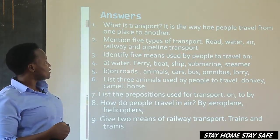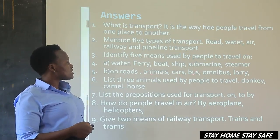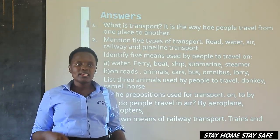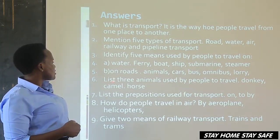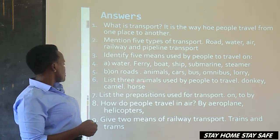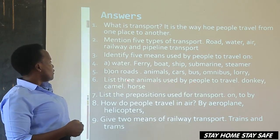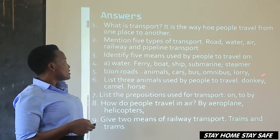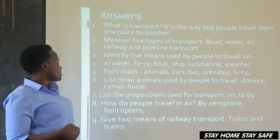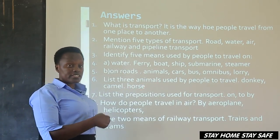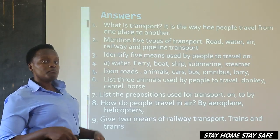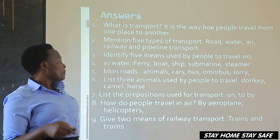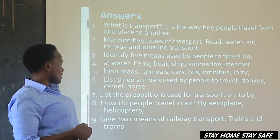Five means used by people to travel on roads: we have animals, cars, buses, omnibuses, lorries, trailers, tankers, and many others. Number six, list three animals used by people to travel. Some use donkeys, others use horses. In some countries, people use elephants; in others, bullocks. But majorly, we have donkeys, camels, and horses.